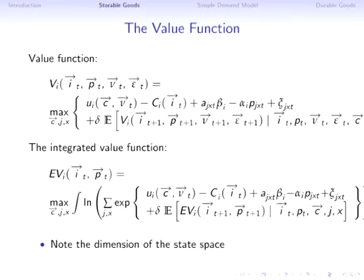The stochastic structure has three components. First, epsilon is IID extreme value type 1 — just the logit error term. Second, the consumption shocks v_t are IID over time and across consumers. Both of these can be relaxed in principle, but it becomes a computational nightmare. Third, prices and advertising follow a first-order Markov process.